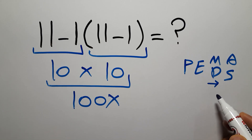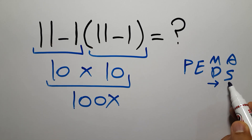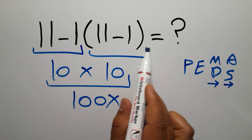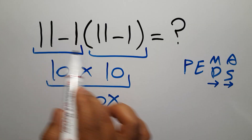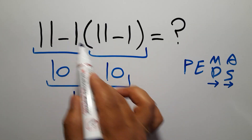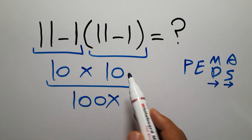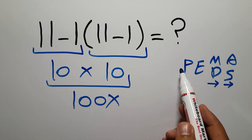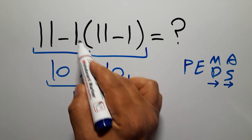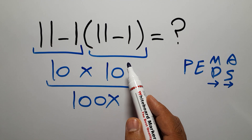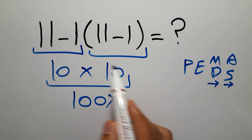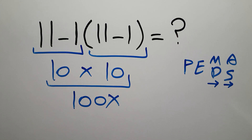First we have to do parentheses, then exponents, then multiplication or division, and finally addition or subtraction. Remember that multiplication and division have equal priority and we work from left to right — the same applies to addition and subtraction. In this expression we have one subtraction, one multiplication, and one set of parentheses. According to PEMDAS, first we do the parentheses, then the multiplication, and finally the subtraction.